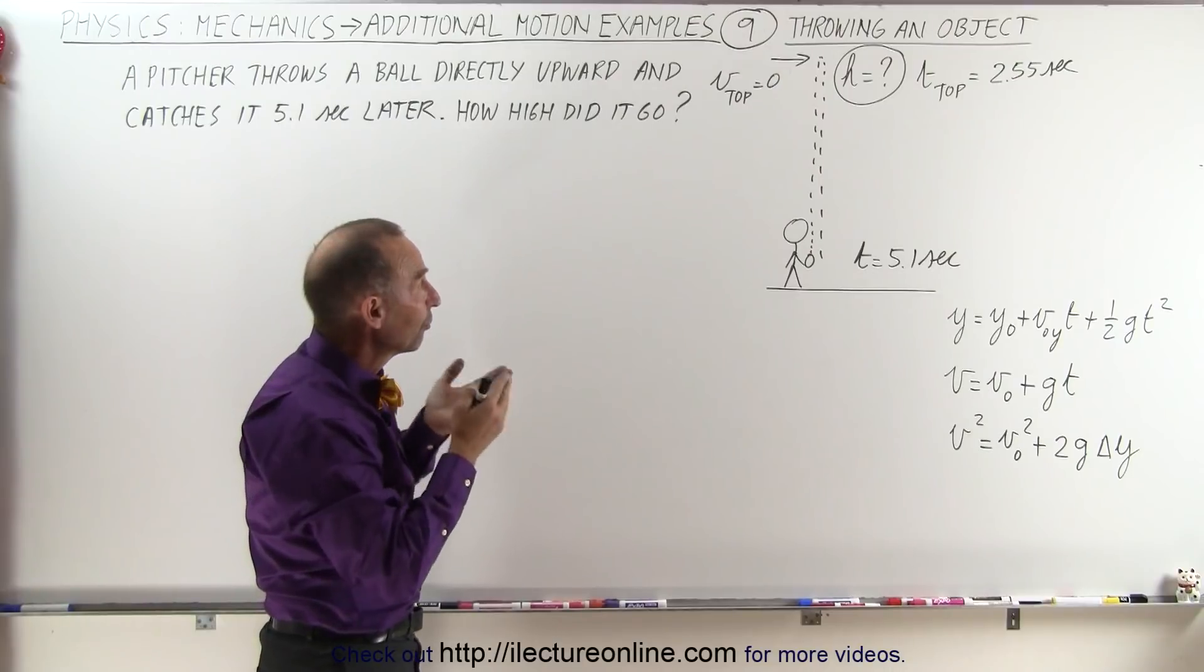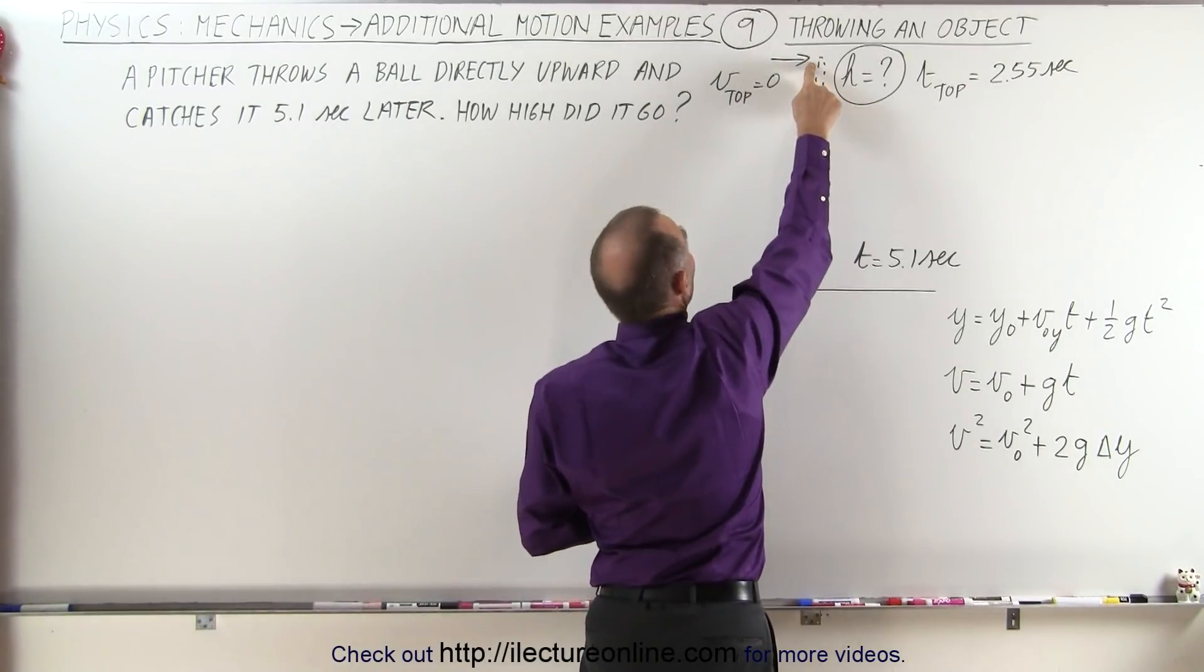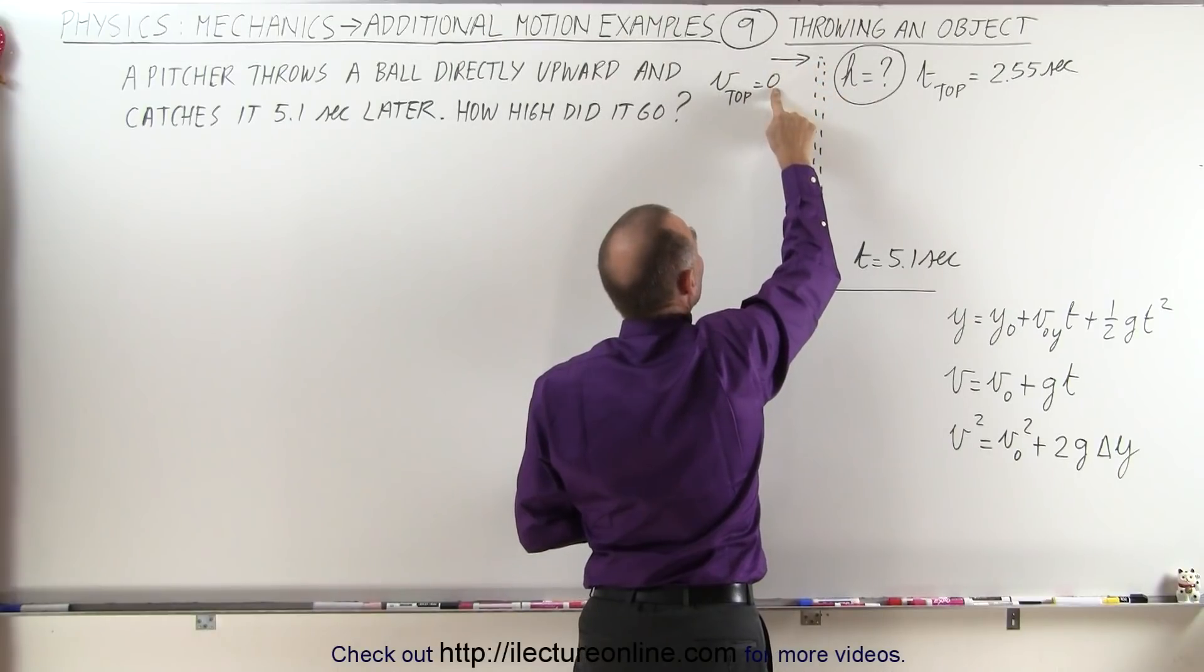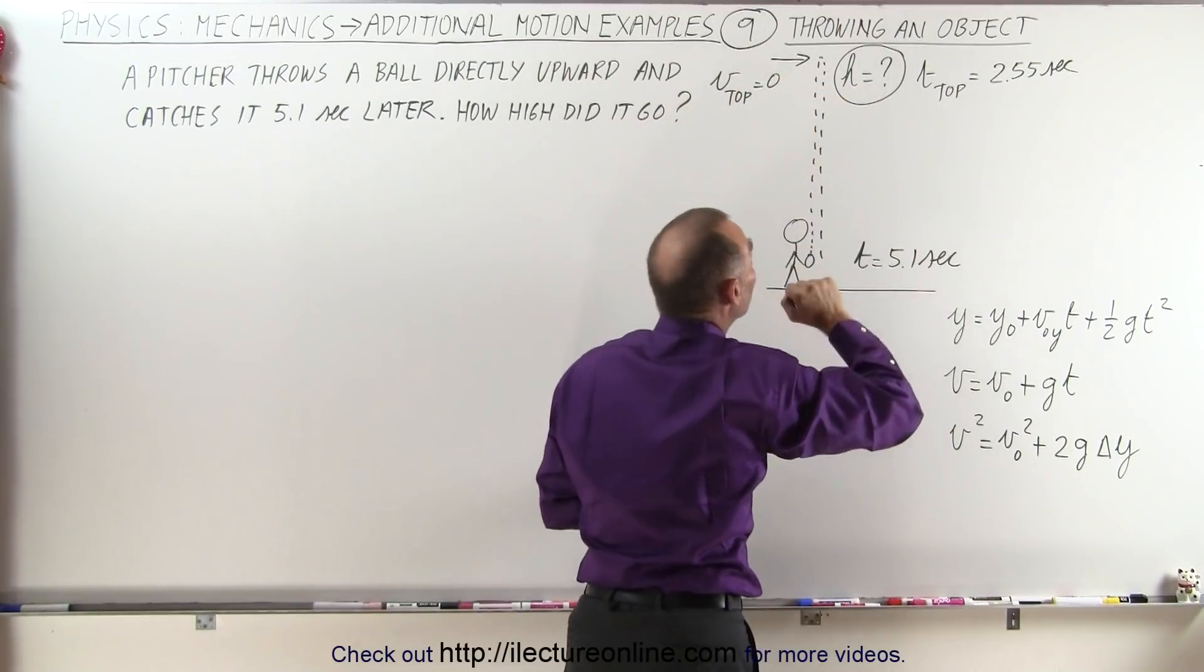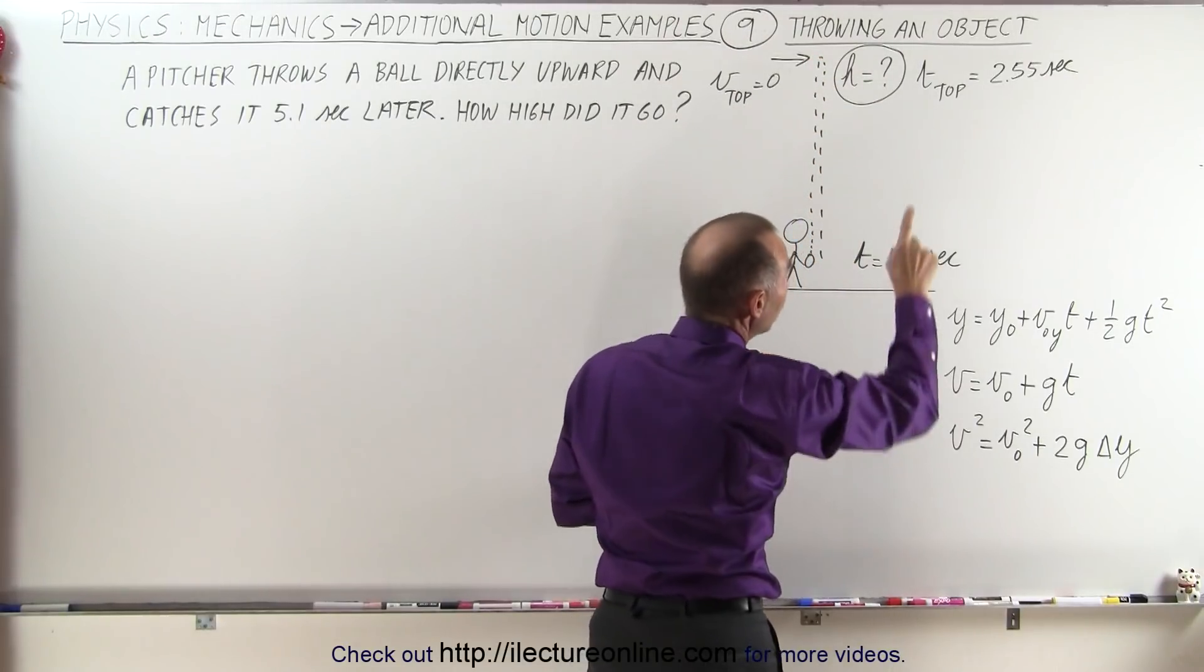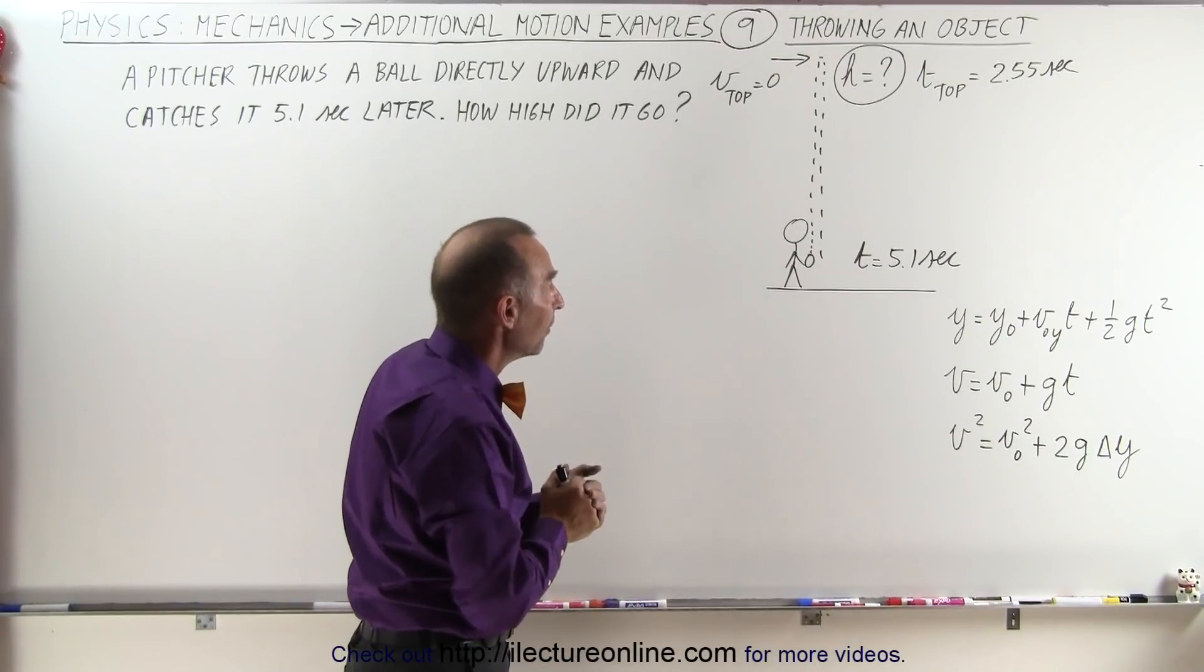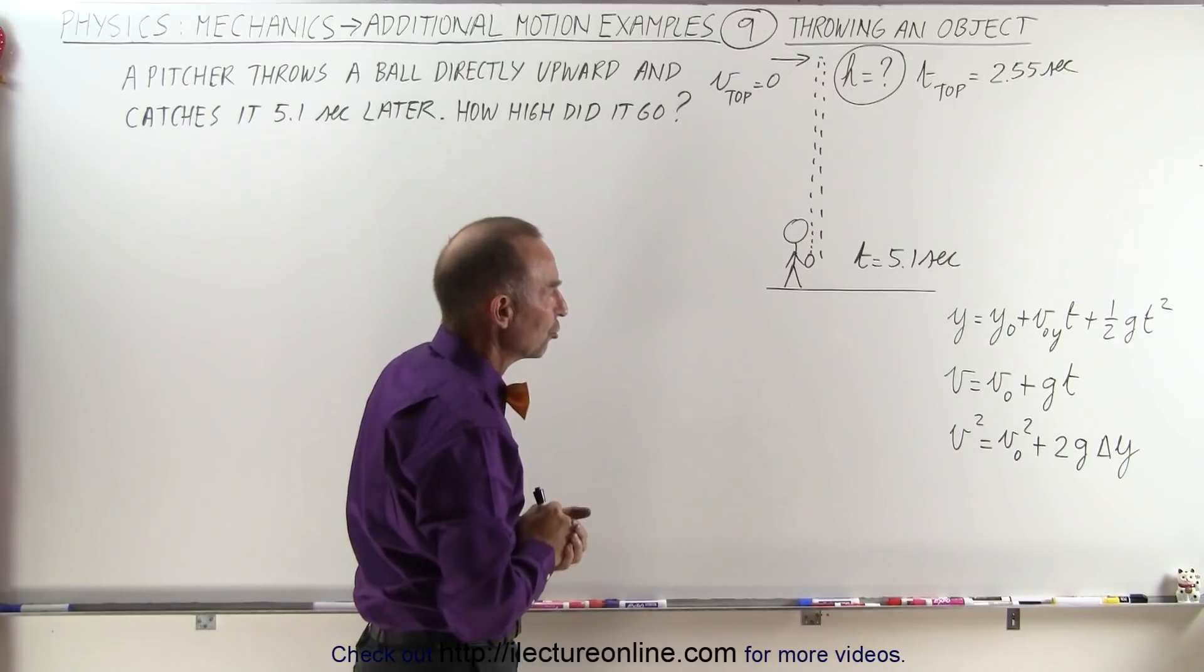So we can actually solve the problem by saying let's assume the ball has reached maximum height, the velocity at the top there will be zero, we can call that the initial velocity, and then we can see how long it takes for the ball to come down, well 2.55 seconds, and then we can figure out how high it fell from, and that will be the height that the ball reached.